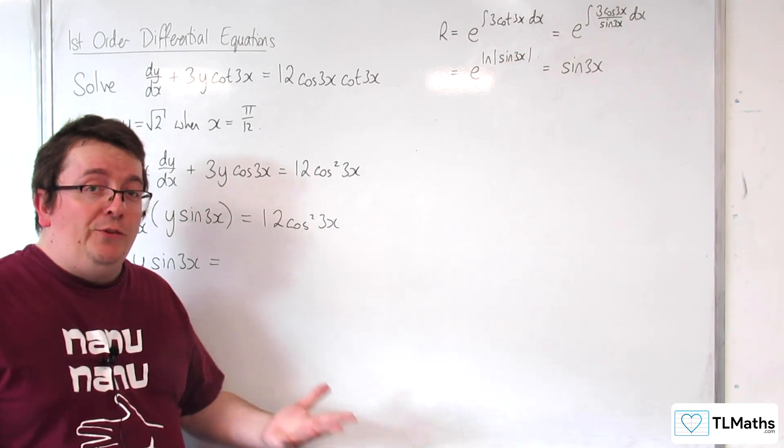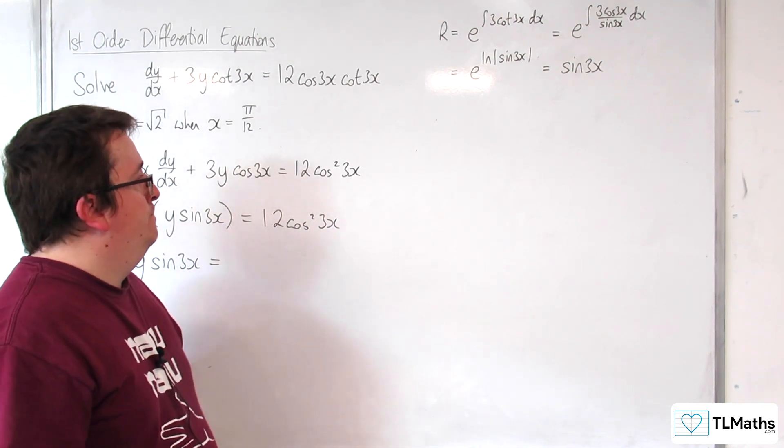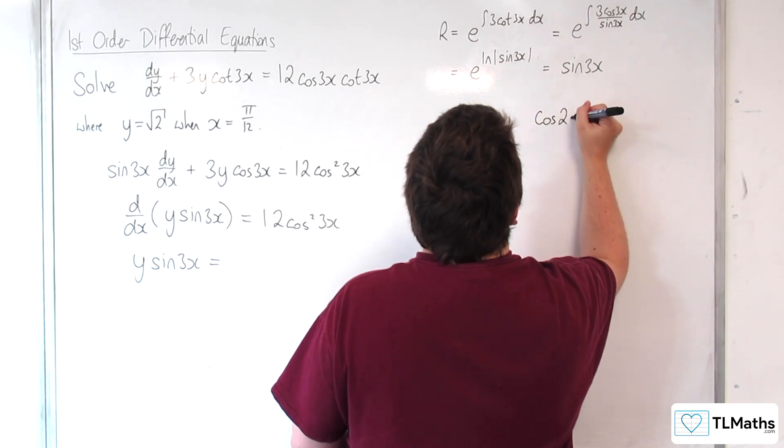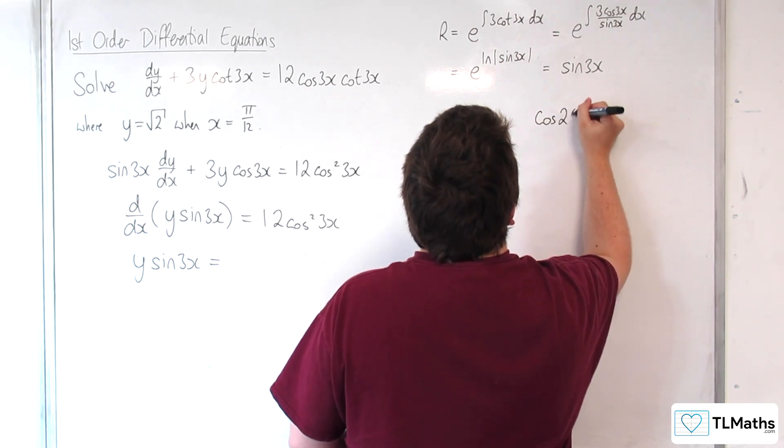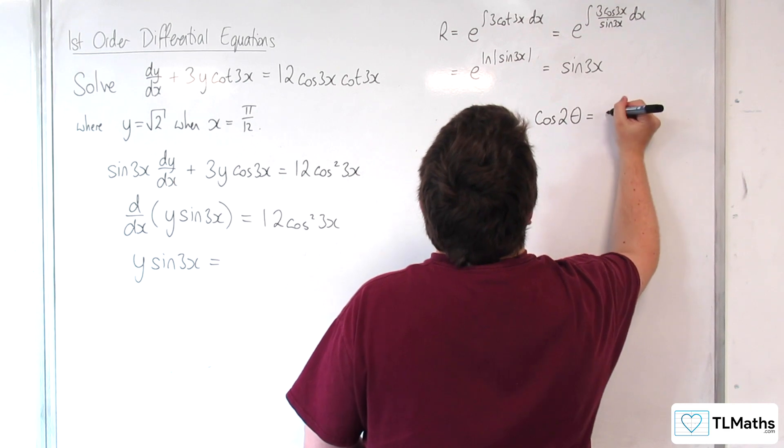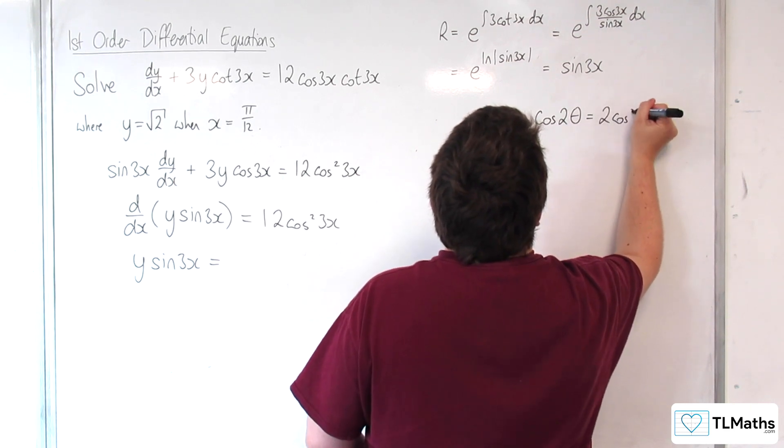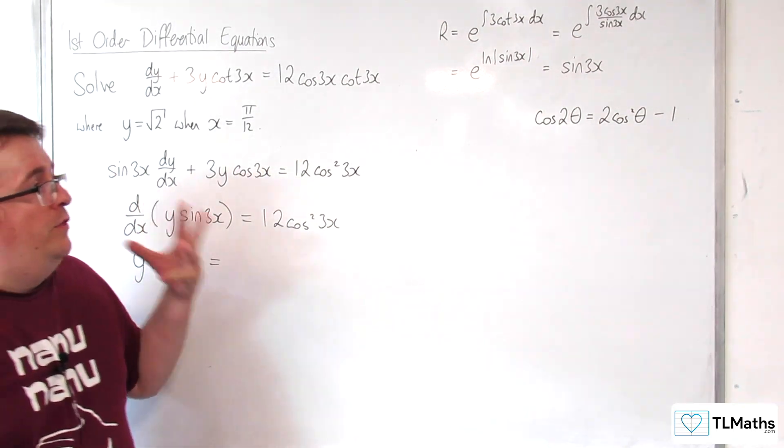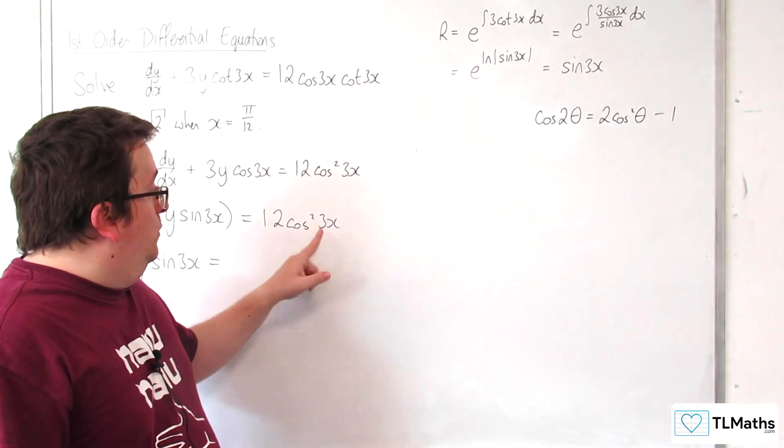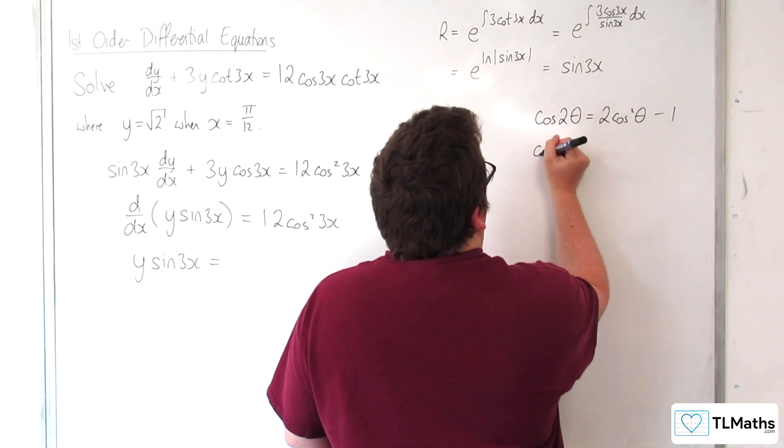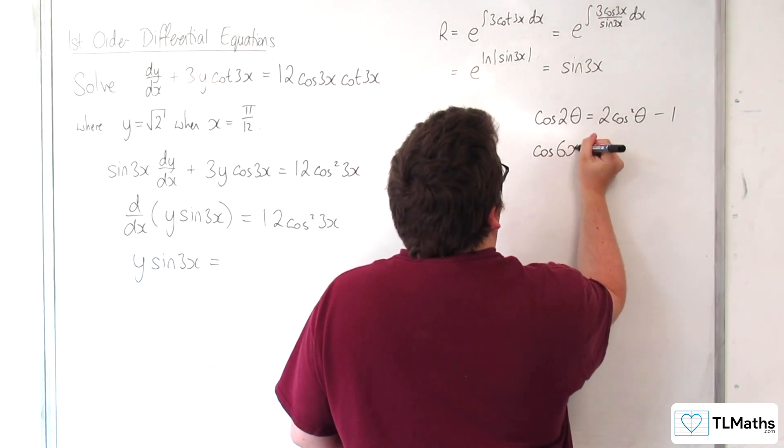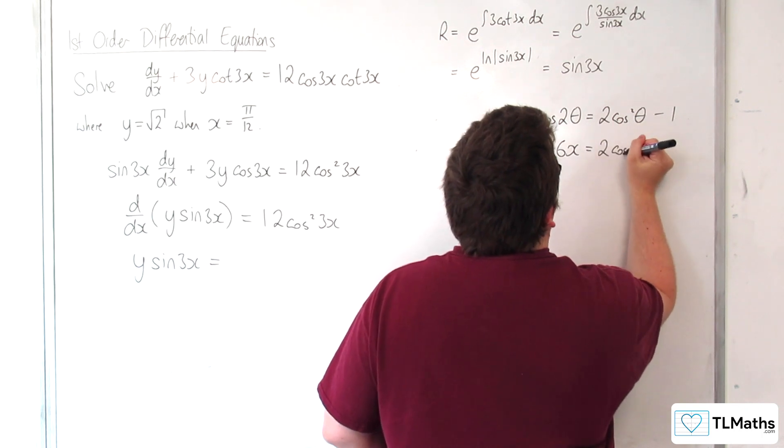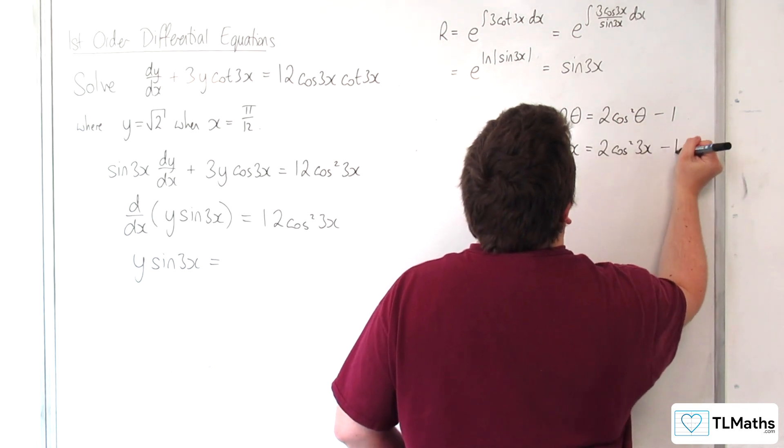Y sine 3x equals the integral of this. In order to integrate this, we're going to have to use our double angle formulae. Remember that cosine of 2 theta is equal to 2 cosine squared theta take away 1. If the theta is 3x, which it is here, we would have cosine of 6x, 2 lots of 3x, is 2 cosine squared 3x take away 1.